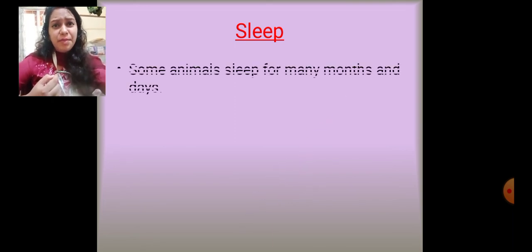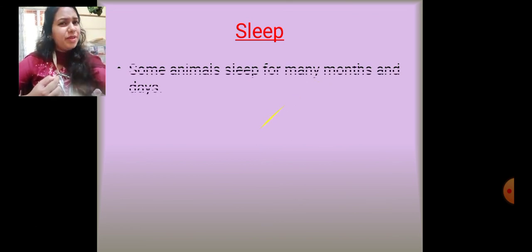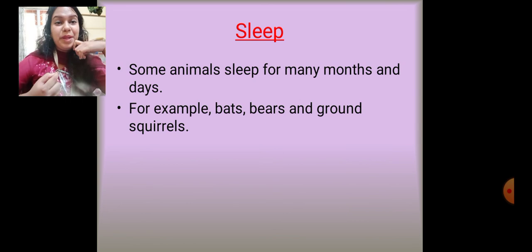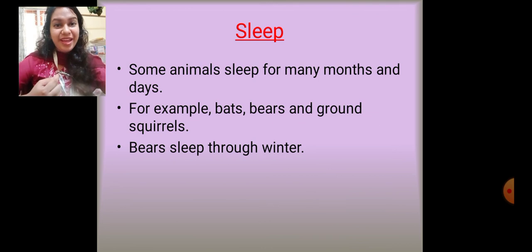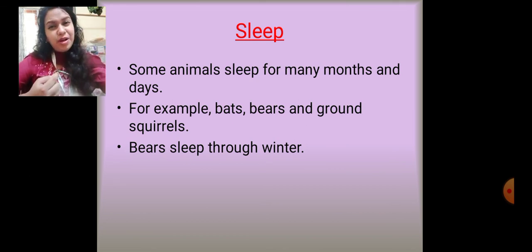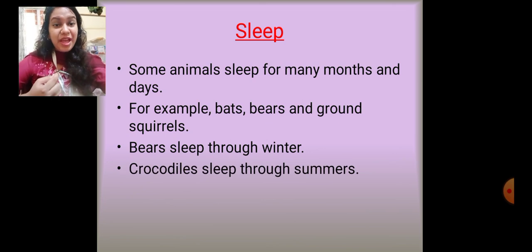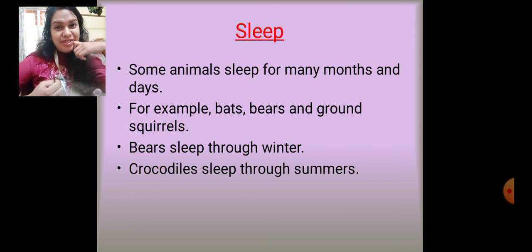Some animals hibernate — they sleep for many months. Examples are bats, bears, and ground squirrels. Bears eat a lot of food and then sleep throughout winter. Crocodiles are the opposite of bears — they sleep throughout summer.